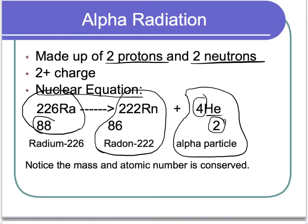the atomic numbers have to stay the same. They have to be conserved. So if we started with 88 over here with radium, and then we lost 2 from the alpha particle, and that means we're left over with 86.